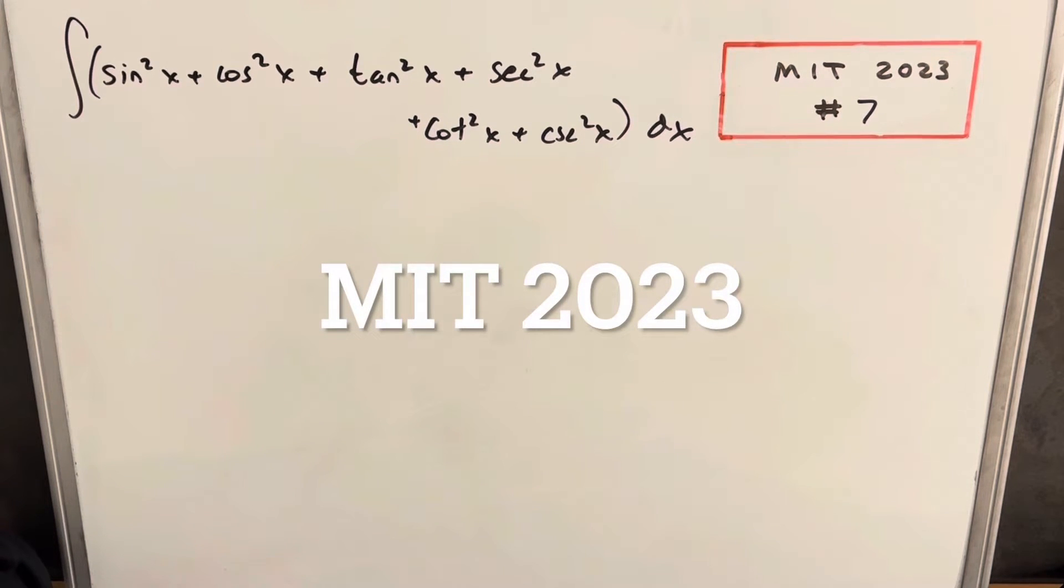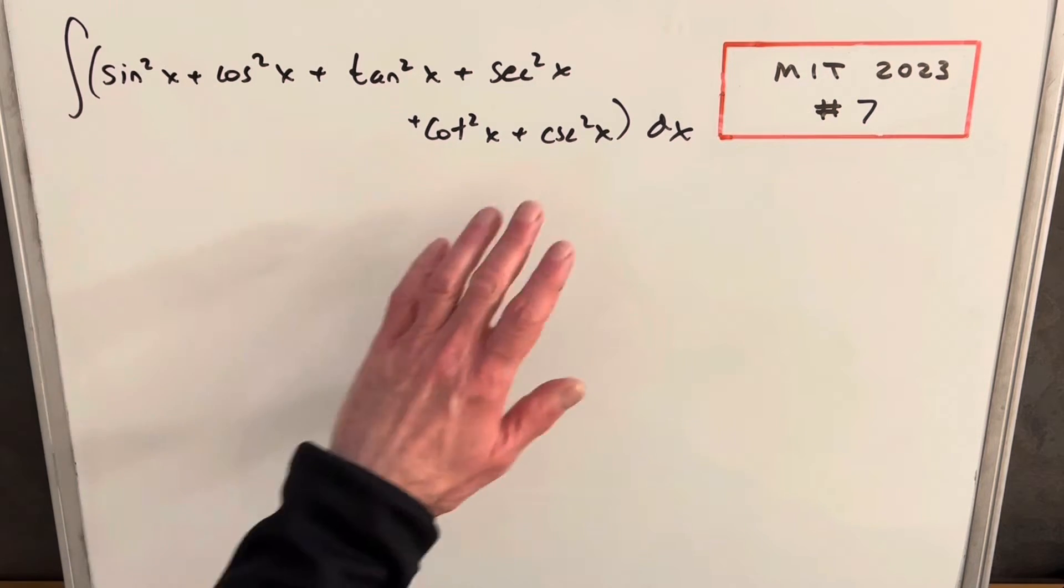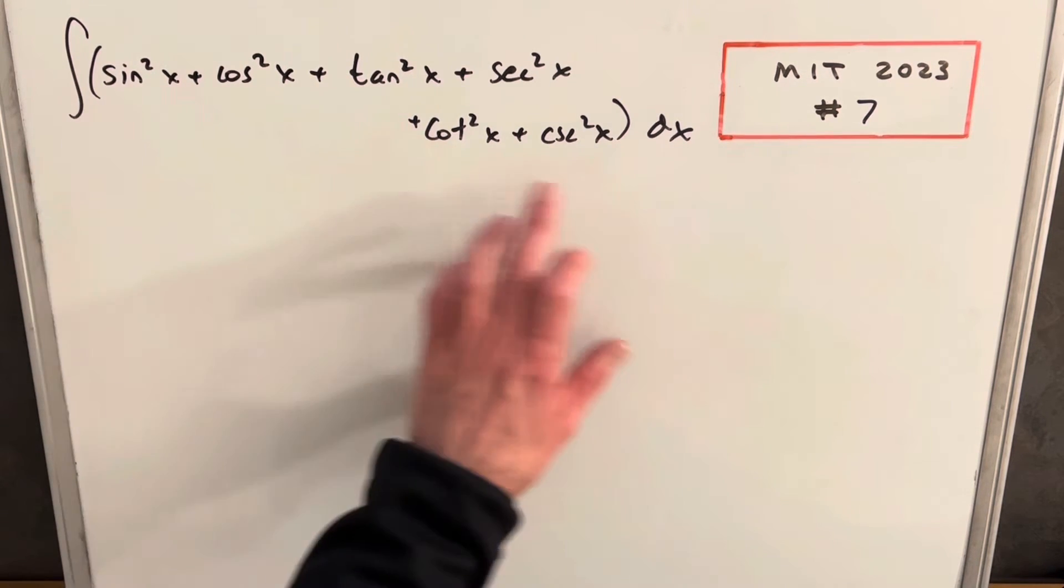We have here another interesting integral from MIT 2023, problem 7. We have the integral of all the trig functions squared and added together dx.